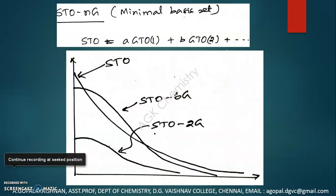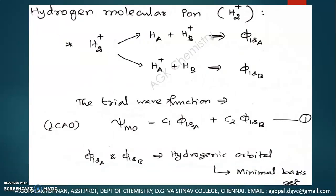This is the basic information about linear combination of atomic orbitals. Now, in molecular orbital theory, we are going to discuss a few examples. The first example I have chosen is the hydrogen molecular ion, because this is the simplest molecular system available. This molecular ion consists of two nuclei and one electron.